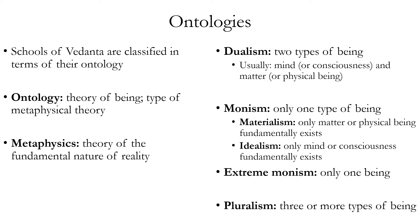Monism is the theory that there's only one fundamental type of being or existence. There are two main varieties: materialism and idealism. Materialism, also called physicalism, holds that only matter or physical being fundamentally exists, so consciousness is just a type or activity of physical being. Idealism is the theory that only mind or consciousness fundamentally exists. Materialism is far more common than idealism historically, though idealism does appear in many philosophical traditions — in particular, Advaita Vedanta from Hinduism is often interpreted as a form of idealism, because of its priority given to the consciousness of the supreme being.